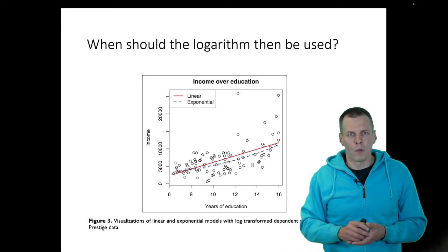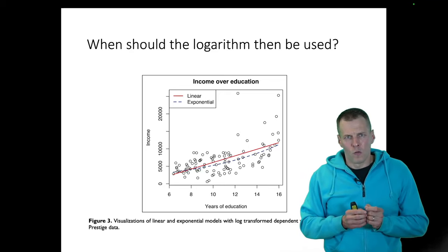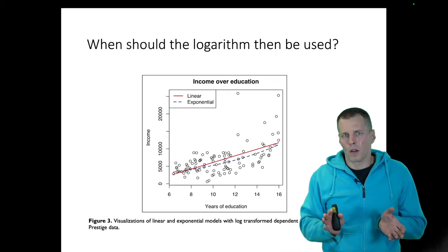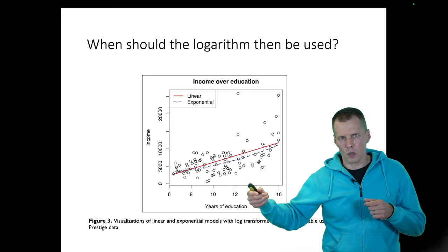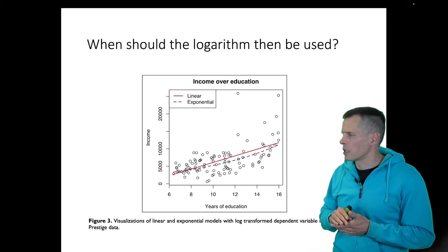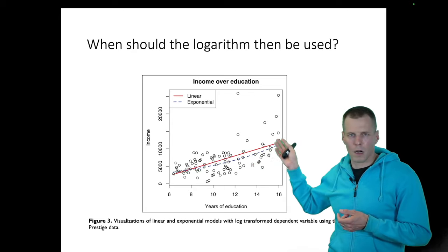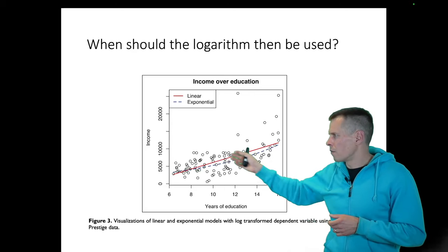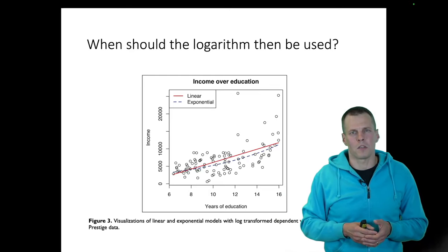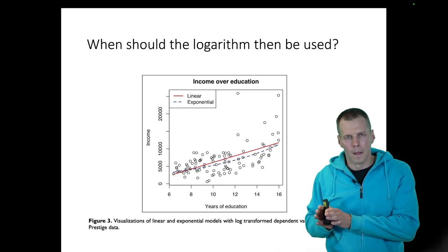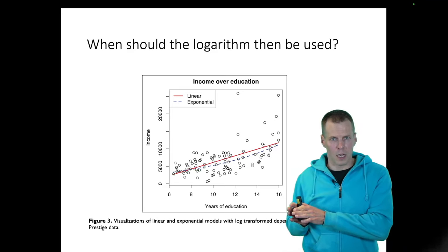So when should a logarithm be used? Log transformation should be used when it's meaningful to expect a non-linear and particularly exponential relationship between the two variables — where as one variable increases, it always increases proportionally to the current value. Here's an example from the paper using Canadian census data from the 1970s. We have observations for different occupations, with income in Canadian dollars and average years of education for workers in each occupation.